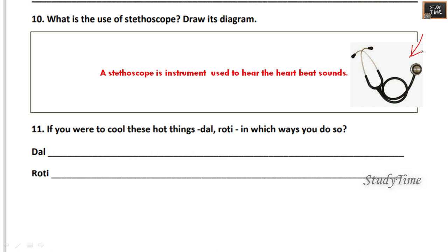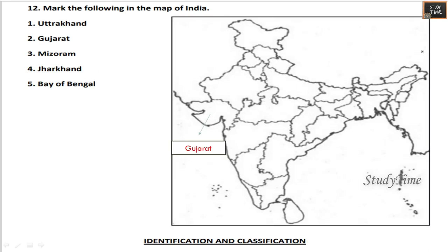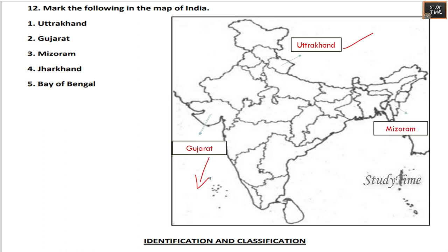If you were to cool things like dal and roti, in which way would you do so? You can pour them in a broad container under the fan, or you can blow air on them from your mouth. Next, mark the following in the map of India: Uttarakhand, Gujarat, and Mizoram — you can find Mizoram here — and Jharkhand, and the Bay of Bengal.